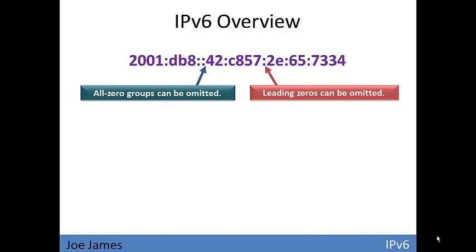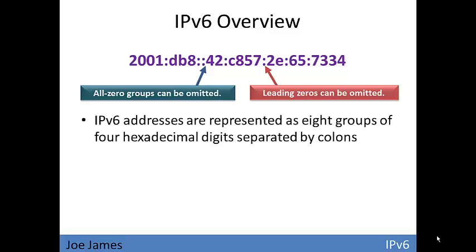The IPv6 address itself uses eight blocks of four hexadecimal digits. Leading zeros can be omitted, and if there is a block that is all zeros, it can be replaced by just a double colon.